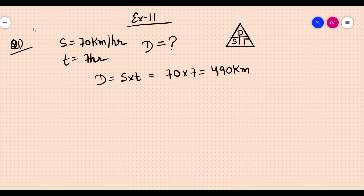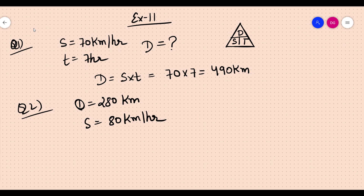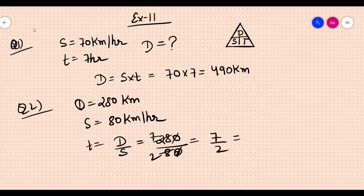Question two: Find the time taken by a bus to travel 280 kilometers at a speed of 80 kilometers per hour. Time equals distance upon speed, so 280 upon 80. Simplifying, the zeros cancel, giving 28 upon 8, which is 7 upon 2. Converting to a mixed fraction, the answer is 3 and a half hours.